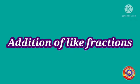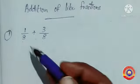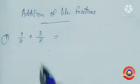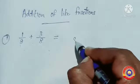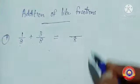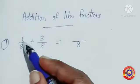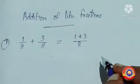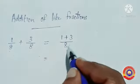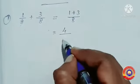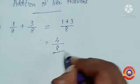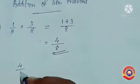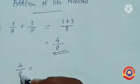Addition of like fractions. First question: 1 by 8 plus 3 by 8. Here the denominators are the same, that is 8. Write the denominator as it is. Now find the sum of the numerators, that is 1 plus 3. 1 plus 3 is equal to 4. Write 4 as the numerator and 8 as the denominator. Then 1 by 8 plus 3 by 8 is equal to 4 by 8.